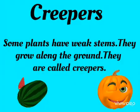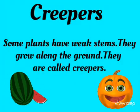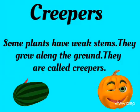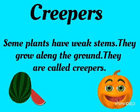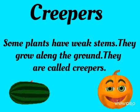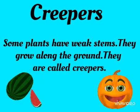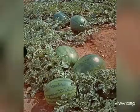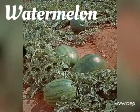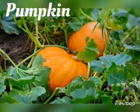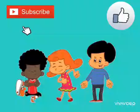Now, the last one is creepers. Some plants have weak stems and they grow along the ground. They are called creepers. For example, watermelon, pumpkin, etc.